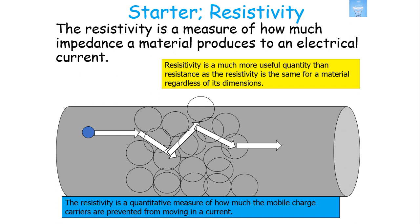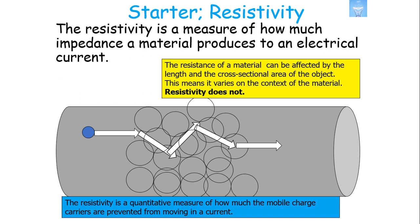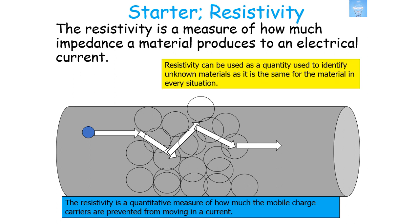The dimensions of the material don't affect the resistivity. It's fundamentally a quantitative measure of how much the mobile charge carriers are prevented from moving in a current in that material. Resistivity will not vary on length, and it will not vary on cross-sectional area — it will only vary on the actual material that it's made from. This makes it a very useful quantity to identify unknown materials.